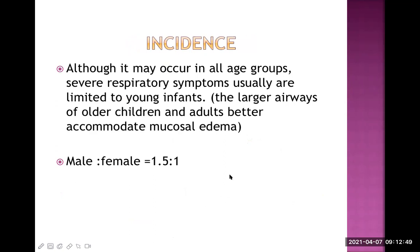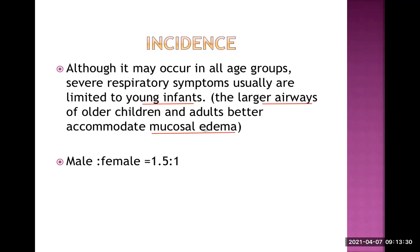What about the incidence — how common is it? Although it may occur in all age groups, severe respiratory symptoms are limited to young infants because those young infants have very small airways. If there is a slight amount of mucosal edema, it can easily cause obstruction. In older children and adults, they have larger airways, so a slight amount of mucosal edema can be accommodated easily. Infants less than six months or up to one year, if affected, usually have severe disease. Male to female ratio is 1.5 to 1, and this is one of the commonest infections in children.